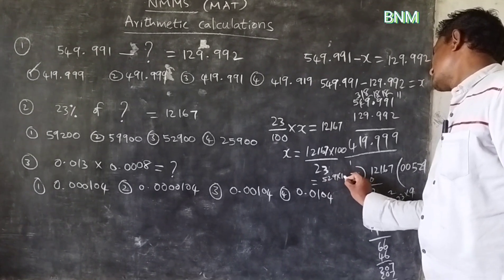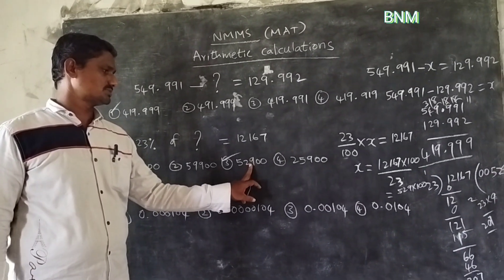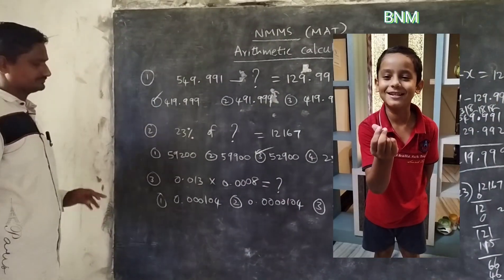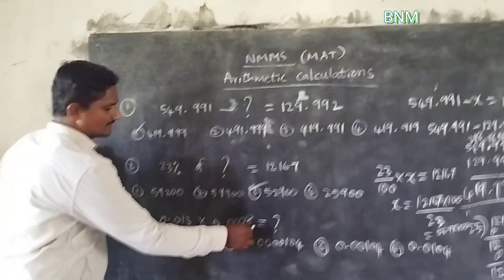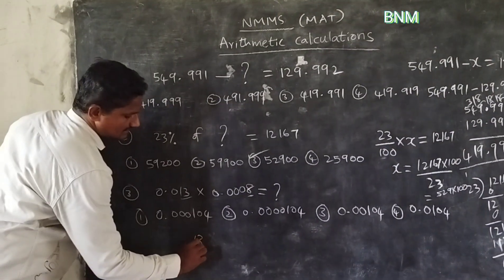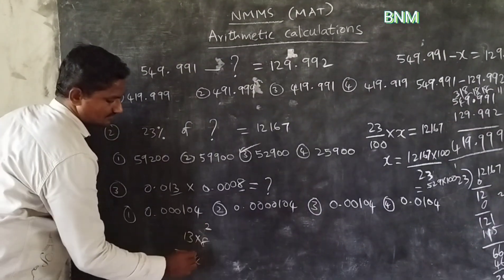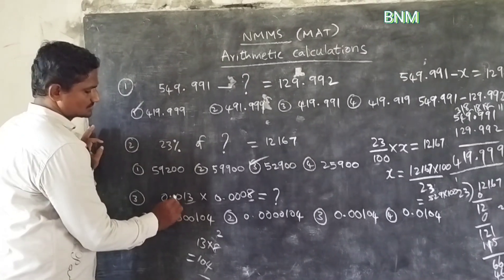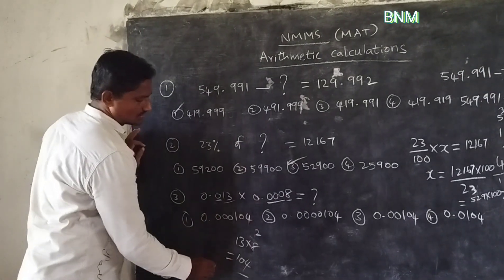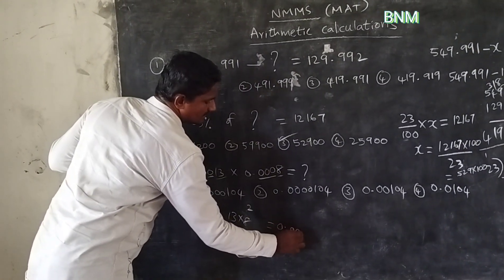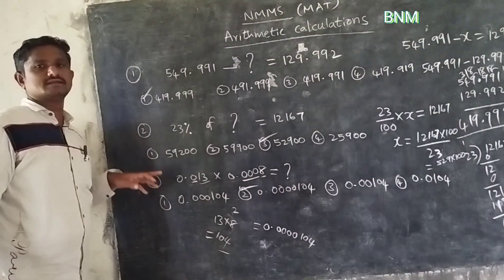529 into 100 gives 52,900. So the answer is 52,900 — option A. After that, the time is 50. 50 times 1, 50 times 2 gives 104. So 3, 4 zeros — second option is the right answer.